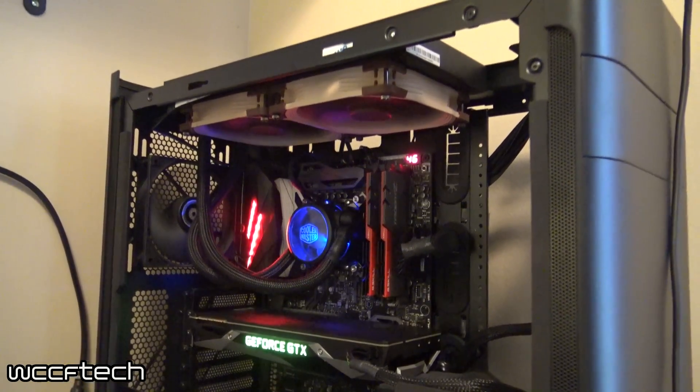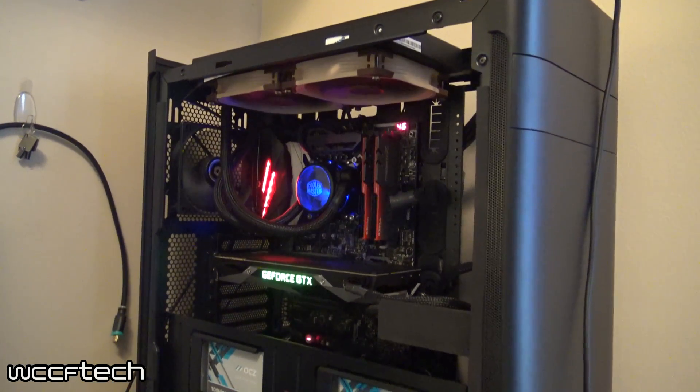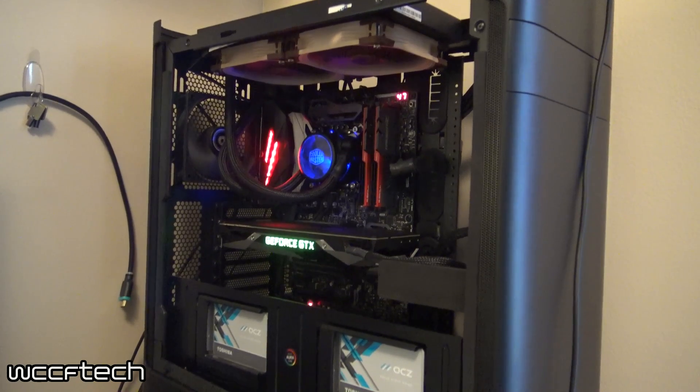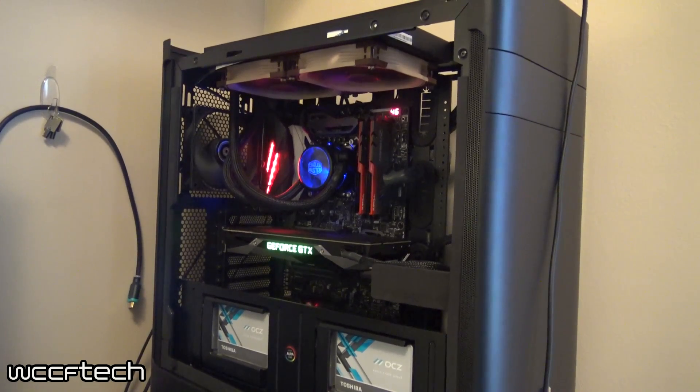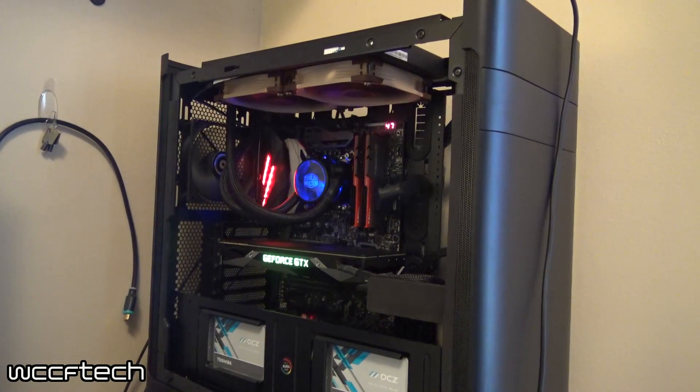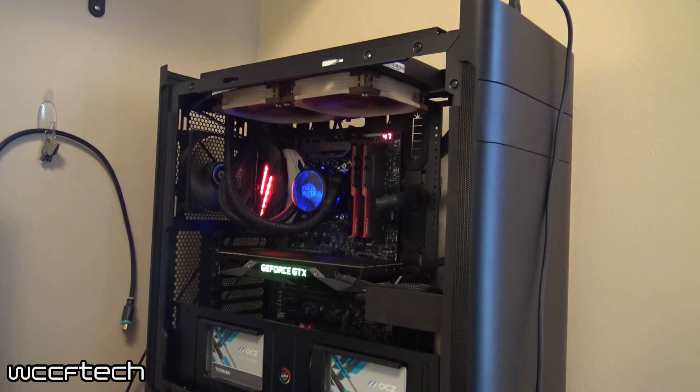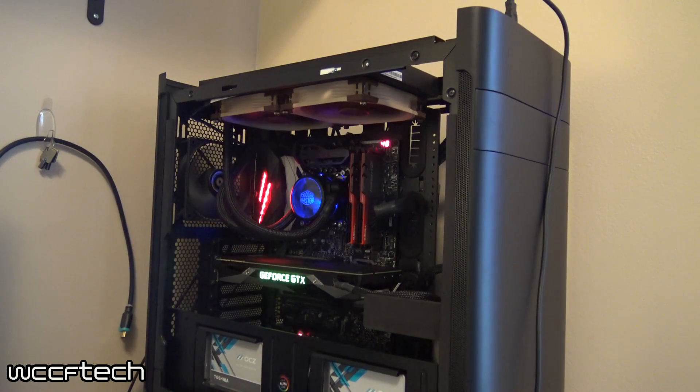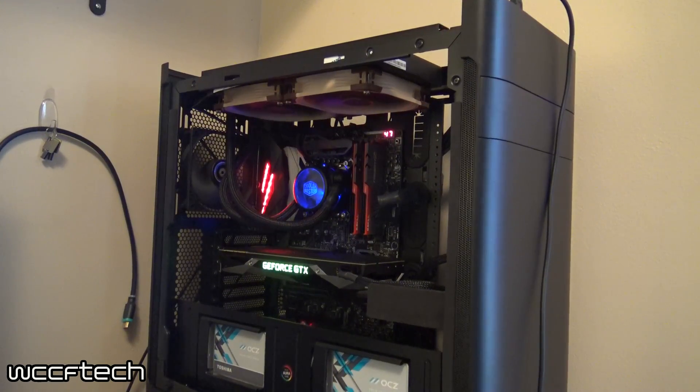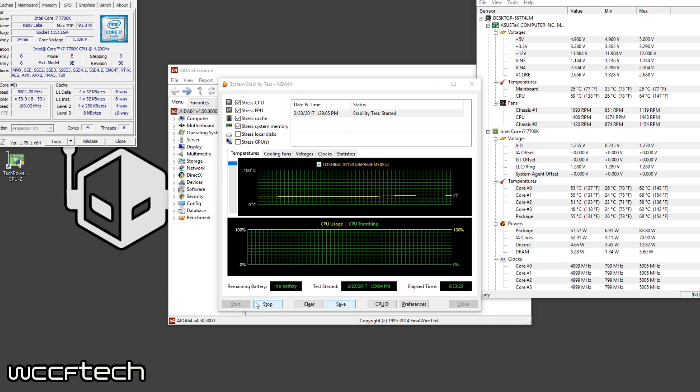This is the i7 7700K like we've already discussed, the ASUS Maximus Nine Hero motherboard, 16 gigs of DDR4 3200, and the cooler is a Cooler Master Master Liquid 280 Pro. Now we did replace the fans that it came with with Noctua NF-A14s and we are running them at 100%, so 1500 RPM static so that we can get a reading.